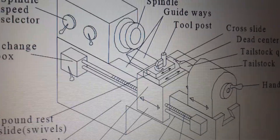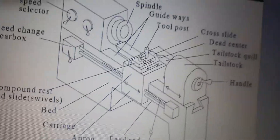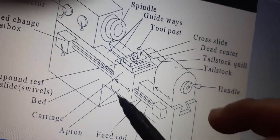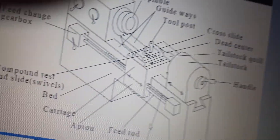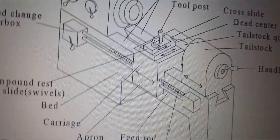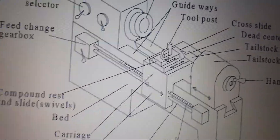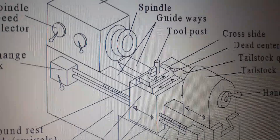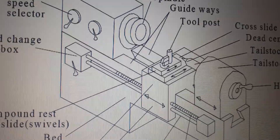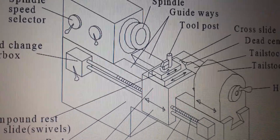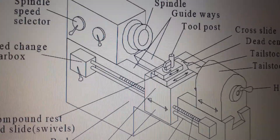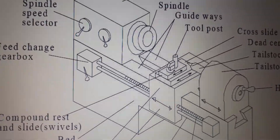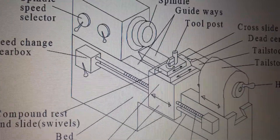The apron, which you can see in the figure, is fitted to the saddle and hangs in front of the bed. It incorporates a hard steel handwheel for moving the saddle longitudinally along the lathe axis, and has gears and lever arrangements to engage and disengage auto feed and thread cutting mechanisms.